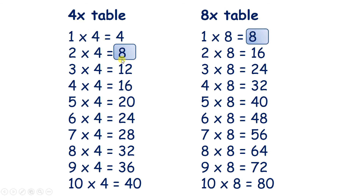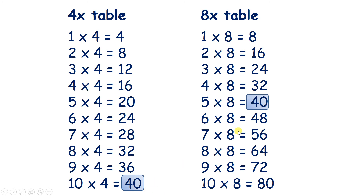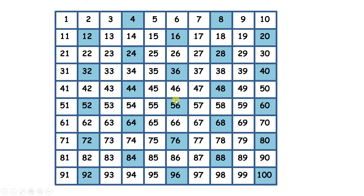So 2 times 4 gives us the same answer as 1 times 8. 4 times 4 is 16, and so is 2 times 8. 6 times 4 is 24, and so is 3 times 8. 8 times 4 is the same as 4 times 8. And 10 times 4 is the same as 5 times 8. So here we have all our multiples of 4 up to 100, and here we have all our multiples of 8.